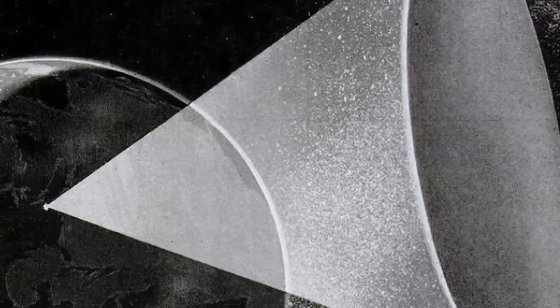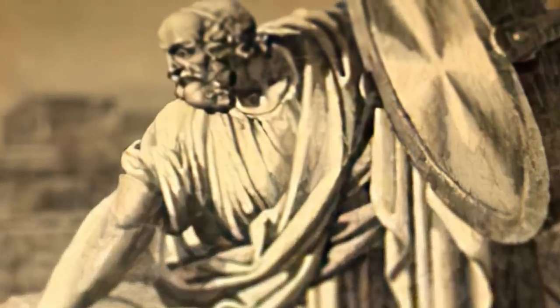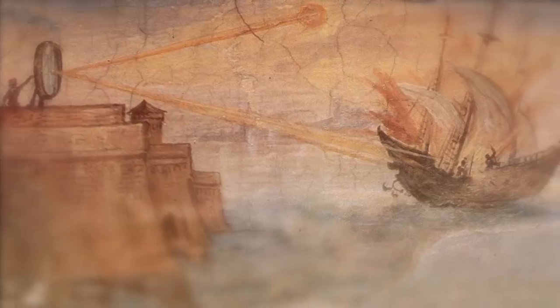The Nazi sun gun was not an entirely new concept. Archimedes allegedly used a similar array of mirrors positioned in a particular shape to burn enemy ships during the Second Punic War in 200 BC.